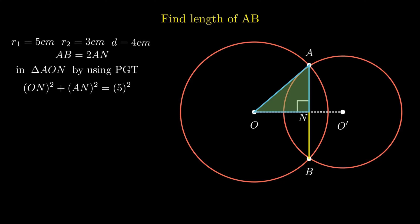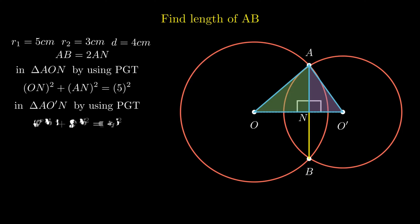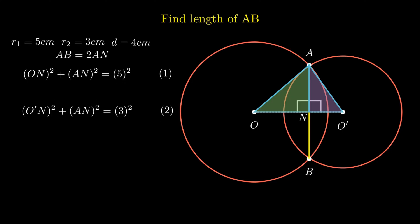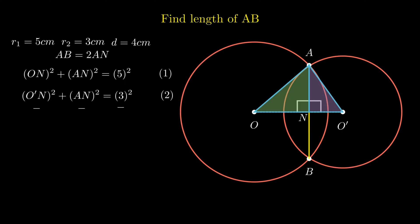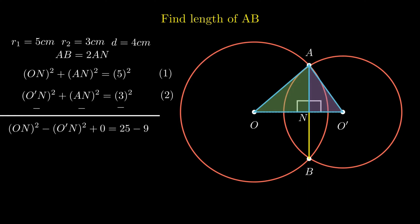The solution to this problem is to have another equation with the same variables. To form another equation with variable AN, consider right-angle triangle AO'N. By using Pythagoras theorem again, O'N squared plus AN squared equals 3 squared. On subtracting equation 1 and 2, we get ON squared minus O'N squared equals 25 minus 9. Therefore, ON squared minus O'N squared equals 16.